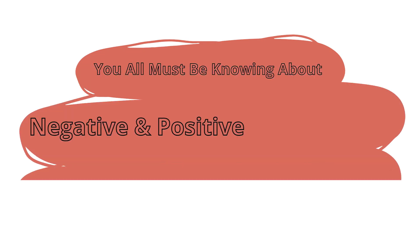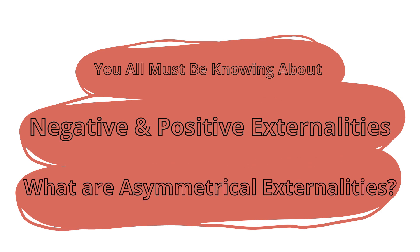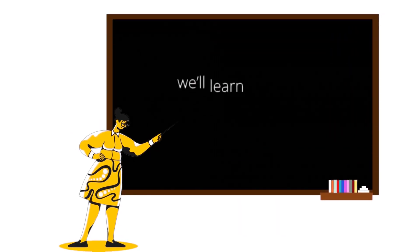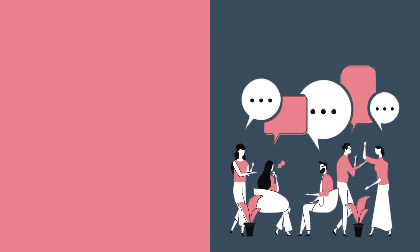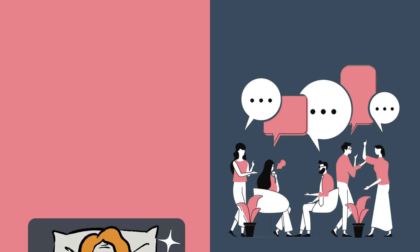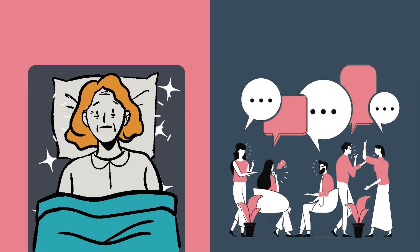You must be knowing about negative and positive externalities, but do you know what are asymmetrical externalities? In this video we learn about asymmetrical externalities. These are externalities caused by a group which has the ability to prevent or reduce the externality, and are suffered by another group which cannot act to reduce the consequences of the externality.